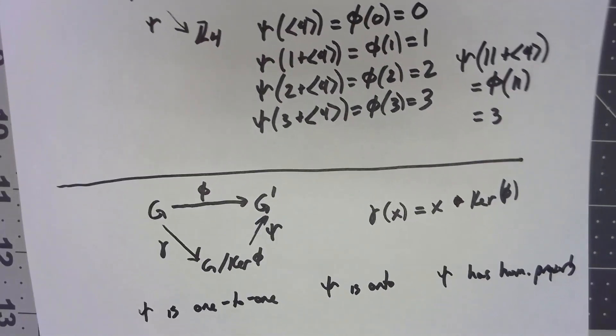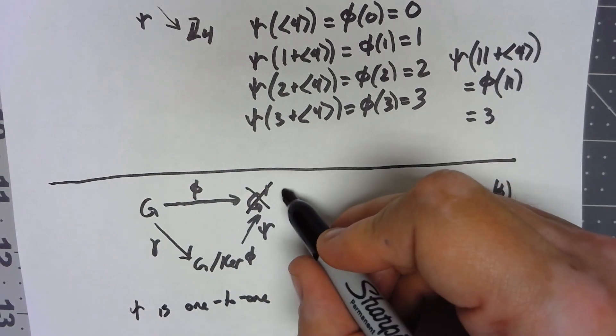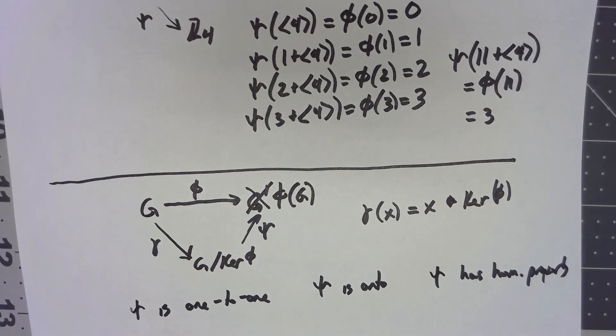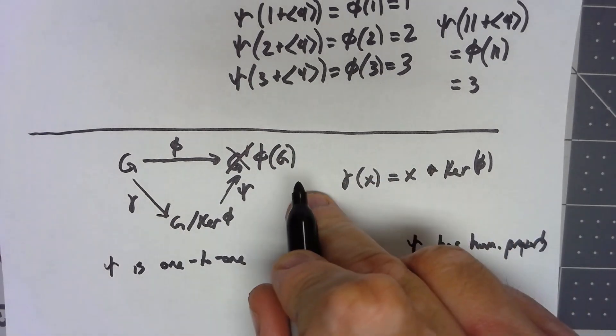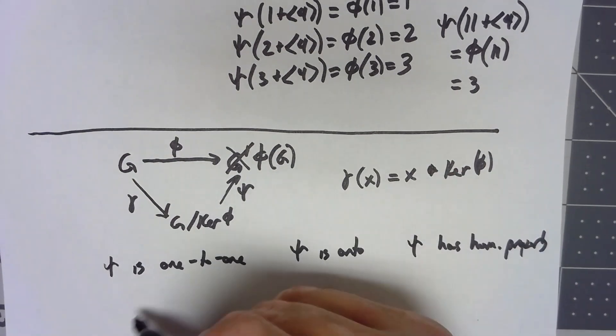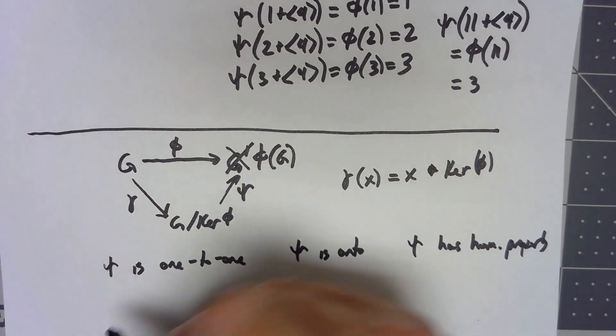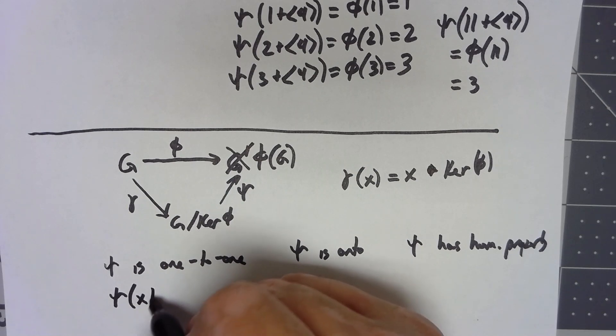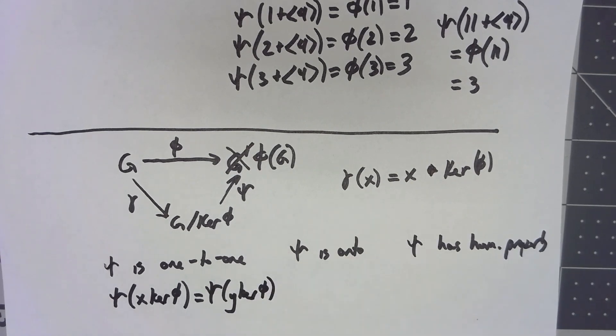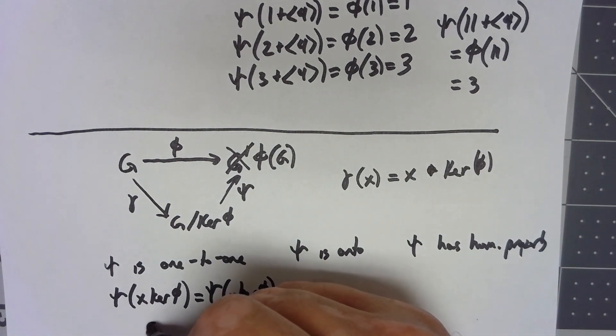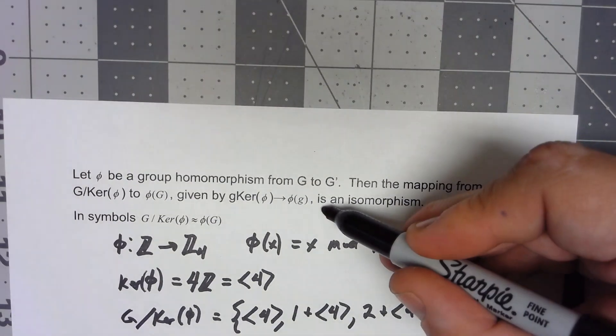Let's start with it being one to one. Now actually, I've got to be a little careful here. I said phi is going to G prime, but when I'm talking about these things, I don't care about all of G prime. I only care about those things that come out of G, and that's important for this being one to one and onto stuff. So suppose that chi of x kernel of phi is equal to chi of y kernel of phi. So that means, by this thing, that phi of x is equal to phi of y, by our definition of what our chi mapping actually is.